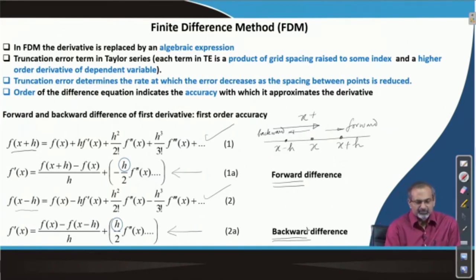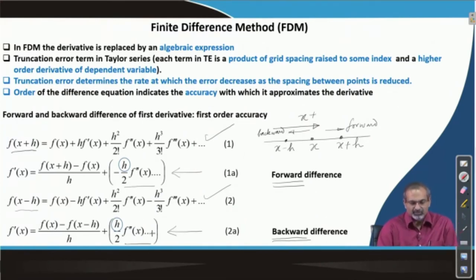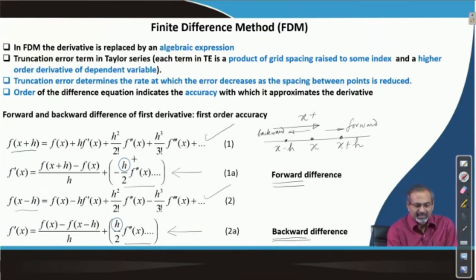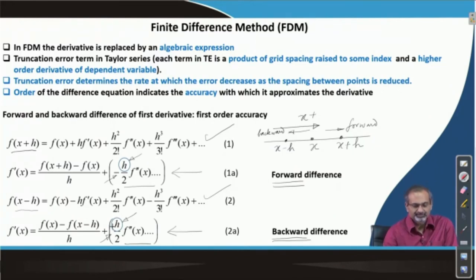Interestingly, we noticed that the truncation error terms for the forward as well as the backward difference cases had terms containing h. In one case it had a negative sign, in another case a positive sign, and in both cases it contained a second derivative of f.